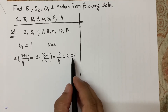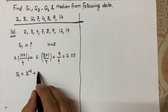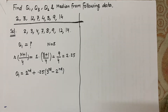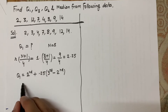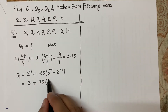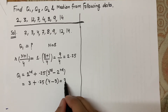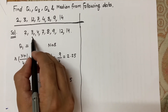So Q1 = 2nd observation + 0.25 × (3rd observation − 2nd observation). Counting from the left, the 2nd value is 3 and the 3rd value is 4. So Q1 = 3 + 0.25 × (4 − 3) = 3 + 0.25 = 3.25. So the value of the first quartile is 3.25, which falls at this position on the data line.